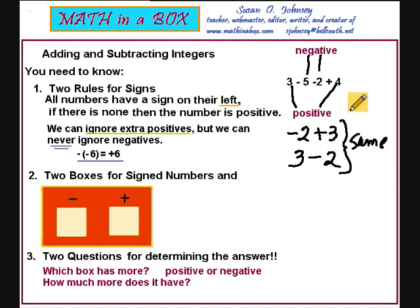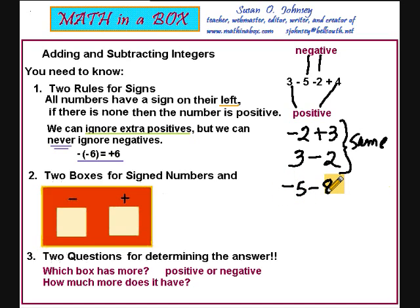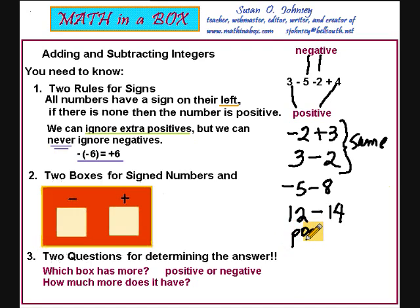Let's look at negative five minus eight. Both of these numbers have a negative on their left side, so both are considered to be negative numbers. What about twelve minus fourteen? The twelve is positive, and the fourteen is negative — there is a negative sign on the left of the fourteen.